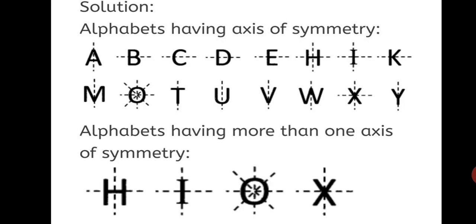Now, look at alphabet O. I mentioned earlier two axes, but more than two also you can draw because you will see that each and every axis that you draw through O, the other two parts fall on each other. Next answer, alphabets having more than one axis of symmetry are H, I, O, and X. These are the four alphabets from A to Z which have more than one axis of symmetry.